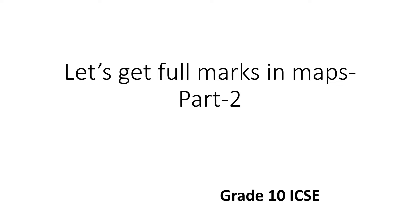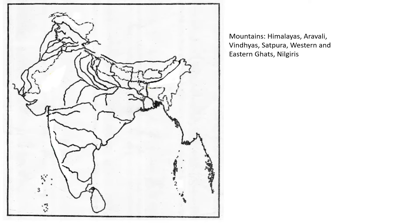We have done part 1, now it is part 2 of 'Let's get full marks in maps.' Next, after rivers, we'll be doing mountains. The mountains you have to do are: Himalayas, Aravalli, Vindhya, Satpura, Western and Eastern Ghats, and Nilgiris. Take the curve of the Indian territory on the north — the arrow should be inside the territory of India — then write Himalaya, all in capitals or at least starting with a capital.